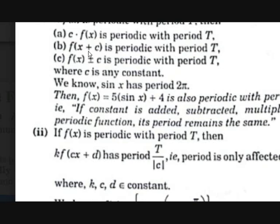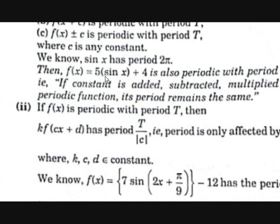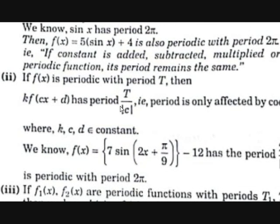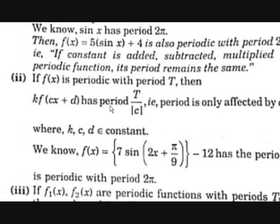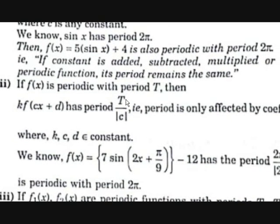For example, the period of sin(x) is 2π, so the period of 5·sin(x) + 4 is also 2π. The second property: if f(x) has period T, then k·f(cx + d) has period T / |c|. The period is only affected by the coefficient of x.